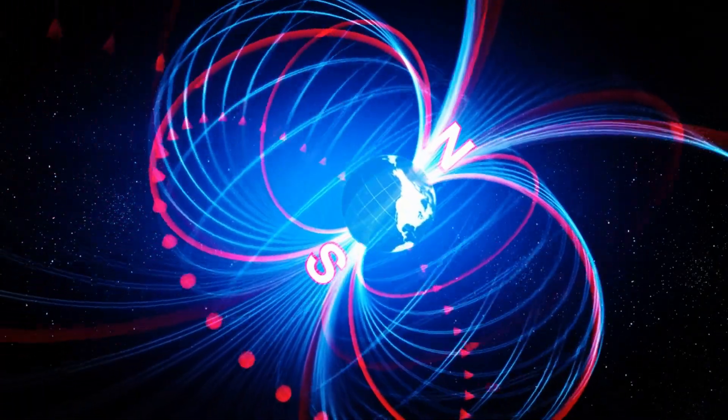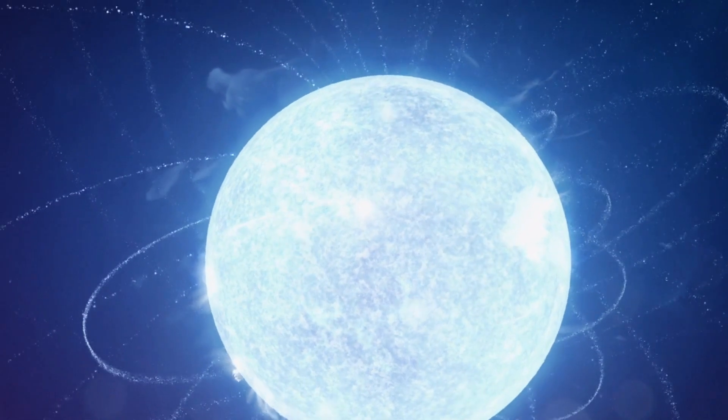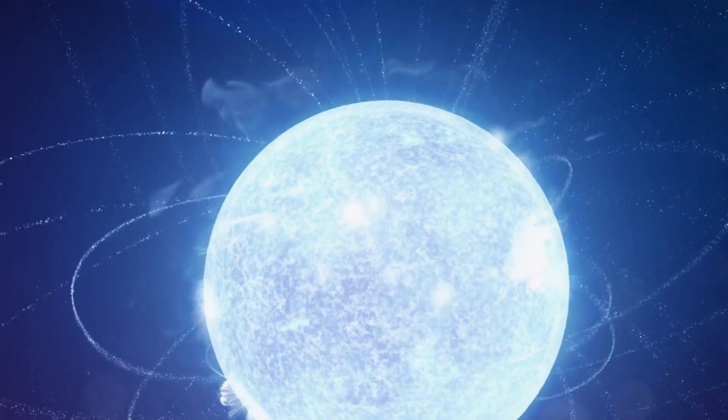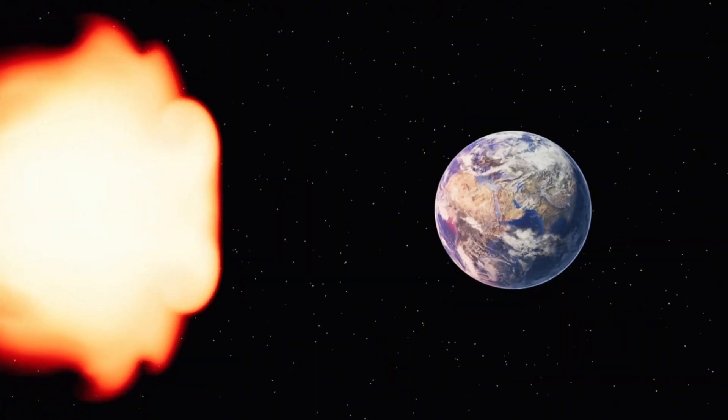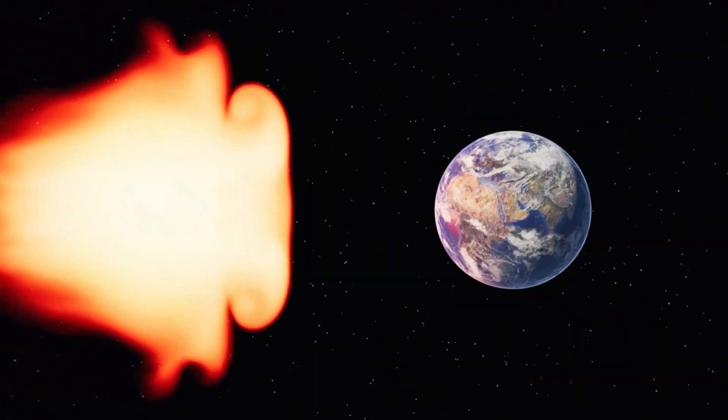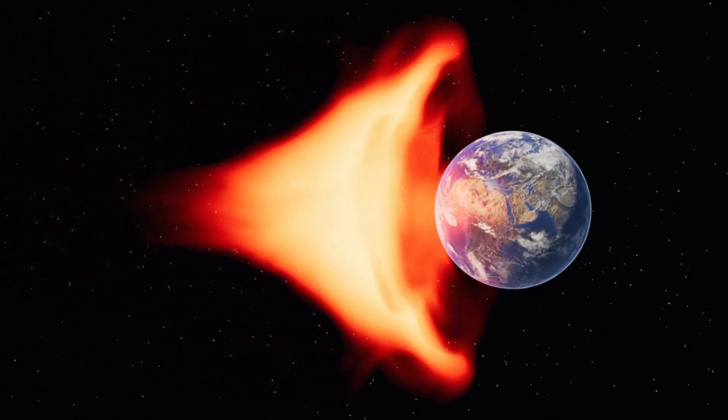Neutron stars have magnetic fields millions of times stronger than Earth's. By the way, a magnetar has a magnetic field a thousand times stronger than a pulsar. So, any sudden change in the direction of these magnetic fields triggers bursts of energy, similar to solar flares but many times more powerful.